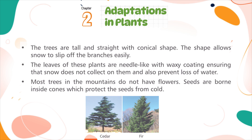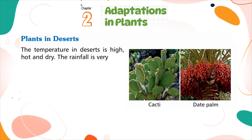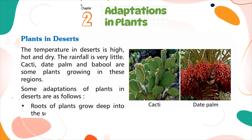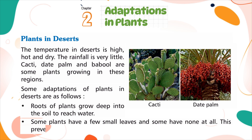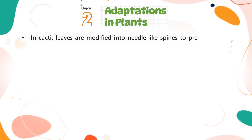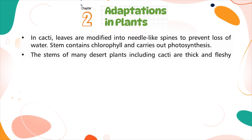Plants in Deserts. The temperature in deserts is high, hot and dry, and the rainfall is very little. Cacti, date palm and babool are some plants growing in these regions. Roots of plants grow deep into the soil to reach water. Some plants have a few small leaves and some have none at all, which prevents the plants from losing water through their leaves. In cacti, leaves are modified into needle-like spines to prevent loss of water. The stem contains chlorophyll and carries out photosynthesis. The stems of many desert plants, including cacti, are thick and fleshy and can store water.